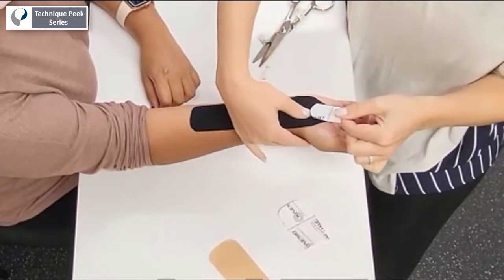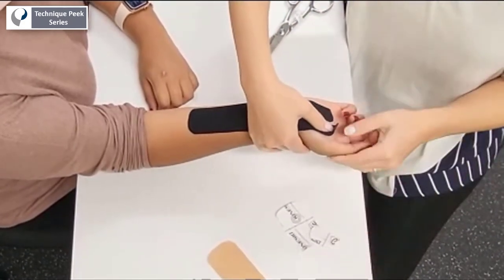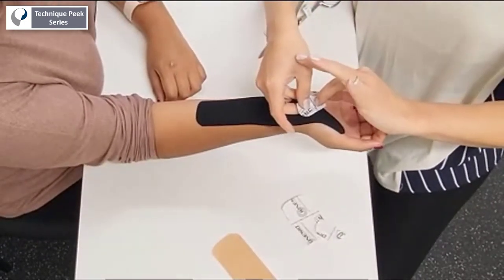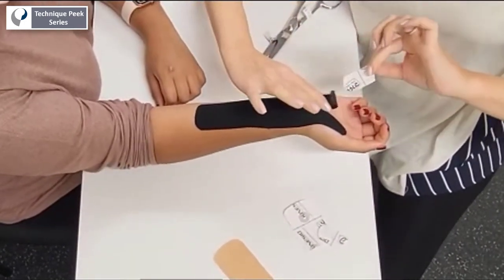Next, apply each tail along the thenar and then hypothenar eminence, being sure to allow the ends to recoil so that they can be applied with no tension.